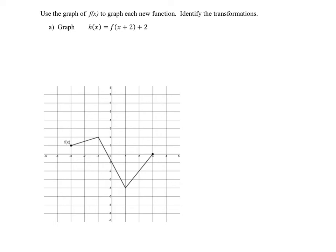In this video we are going to use our knowledge of transformations to graph some new functions. We're given the graph of f of x and asked to graph a new function h of x. The function rule is telling us what to do with f of x, and it has two changes: f of x plus 2 has a plus 2 inside the parenthesis with x, and also a plus 2 outside the parenthesis. Each of these 2's is going to cause a different movement of our graph.